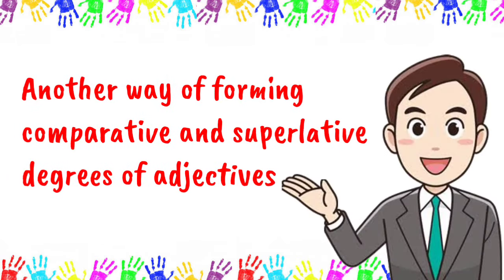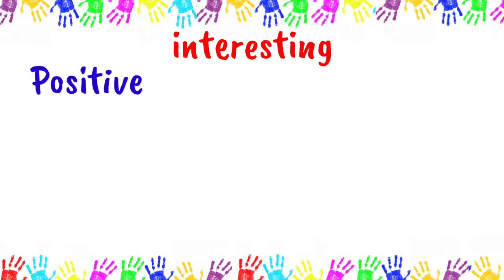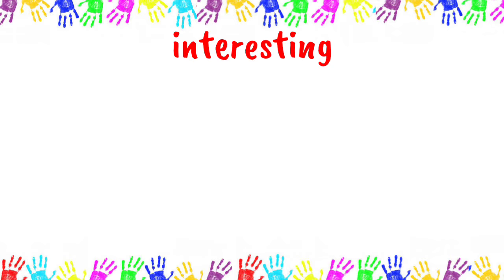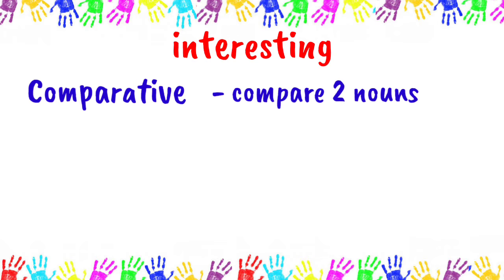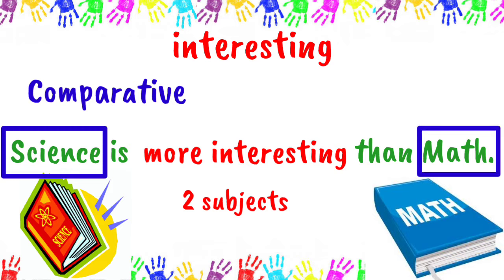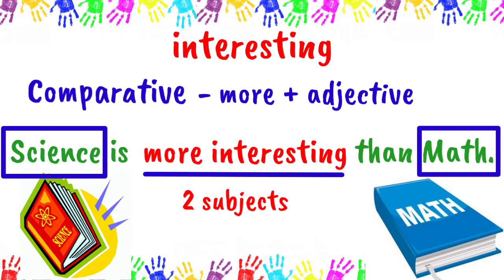I'll show you another way of forming the comparative and superlative degrees. Let's take 'interesting' as an example. The positive degree of 'interesting' is still 'interesting.' 'Math is an interesting subject' — here, 'interesting' describes only one subject. Now, 'Science is more interesting than math.' There are two subjects being compared, and 'interesting' became 'more interesting.' This is another way of forming the comparative degree — we put 'more' before it.